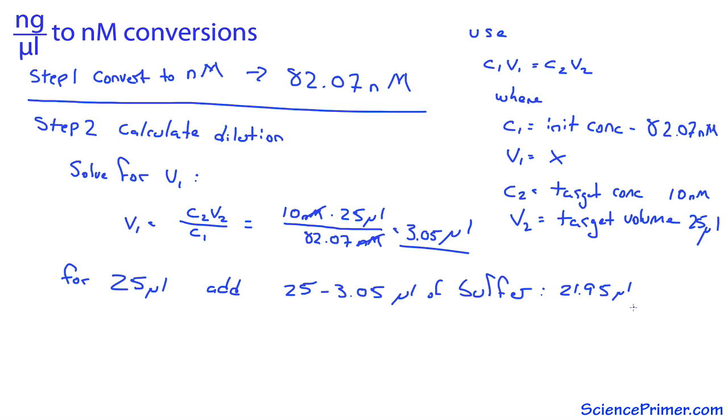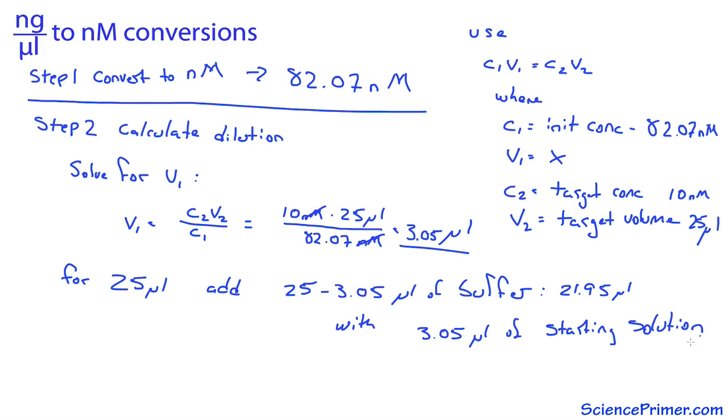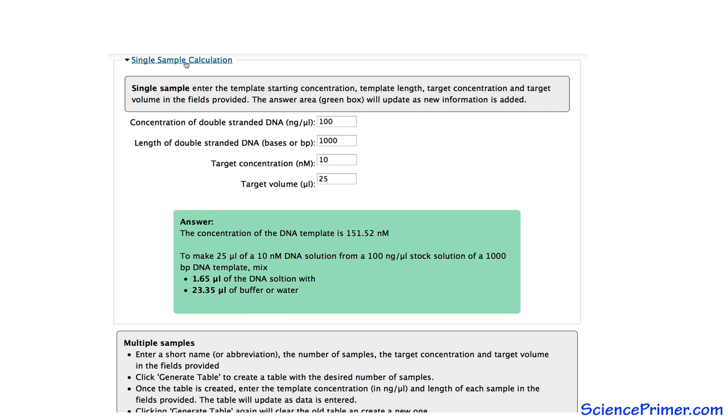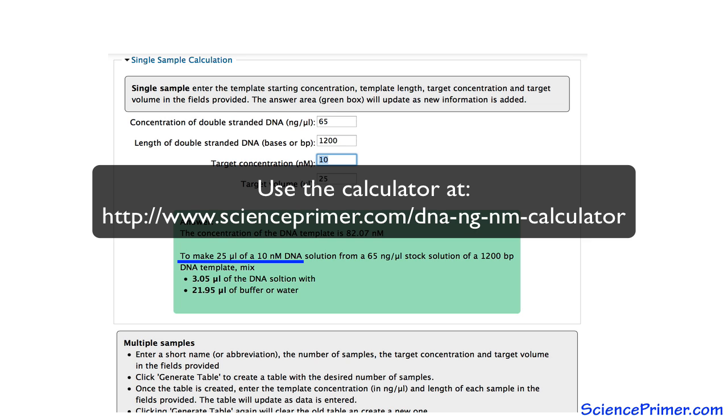21.95 microliters of buffer combined with 3.05 microliters of the original 65 nanogram per microliter solution will give us what we want. These values can be checked using the calculator at scienceprimer.com. Entering 65 nanograms per microliters of a 1,200 base pair long DNA gives the same value as I calculated earlier. An 82.07 nanomolar solution from which mixing 3.05 microliters of it with 21.95 microliters of buffer creates 25 microliters of a 10 nanomolar solution.